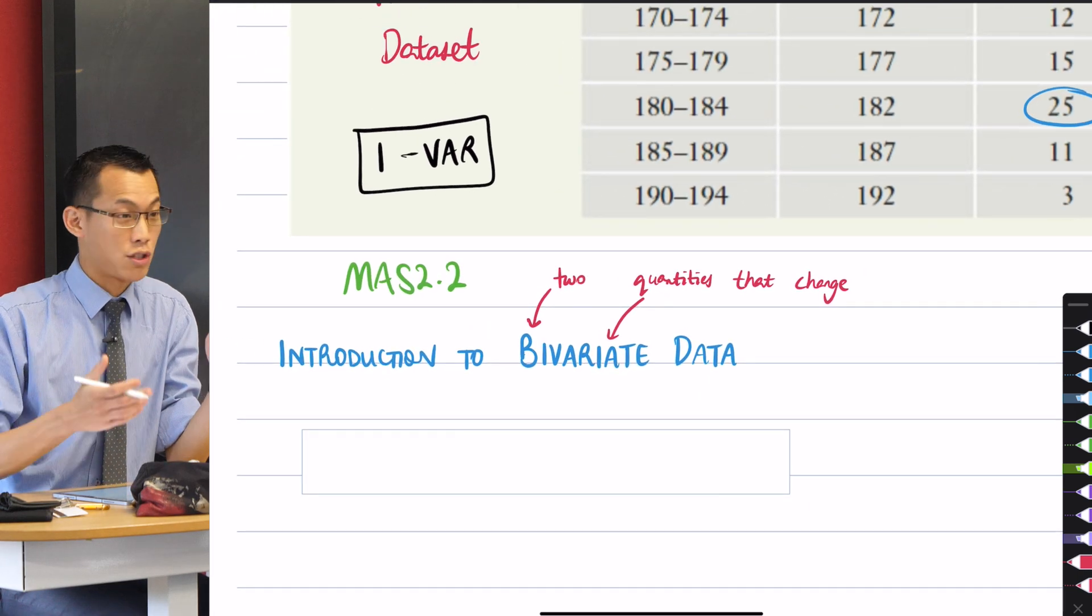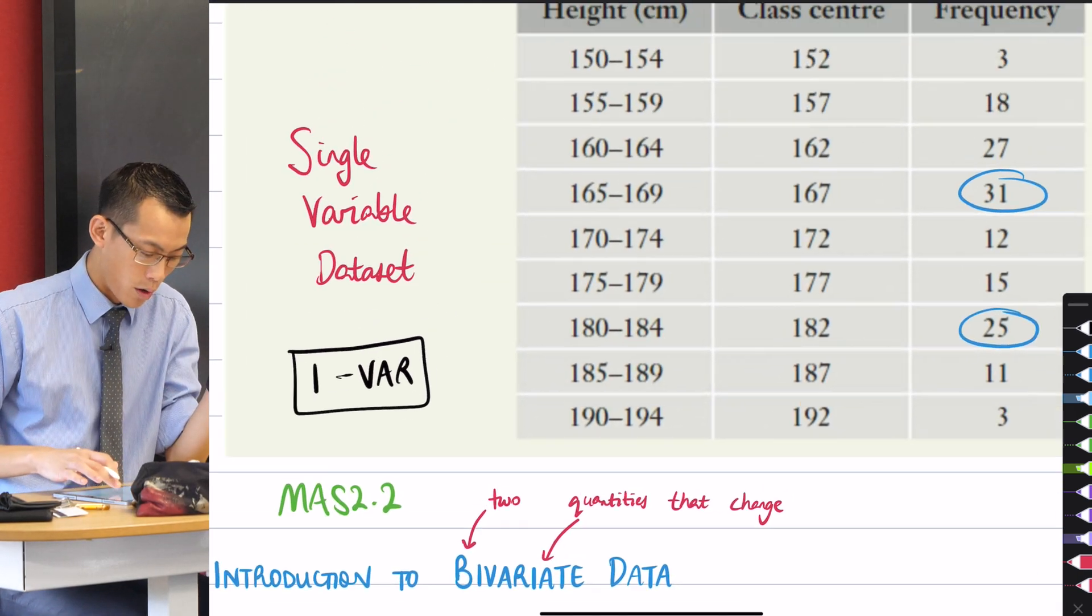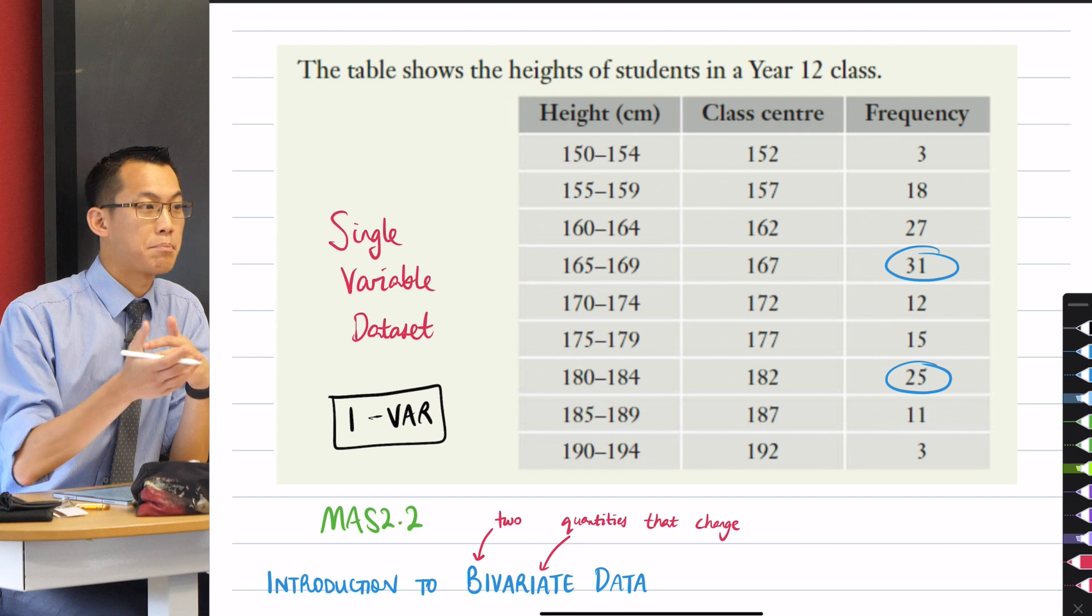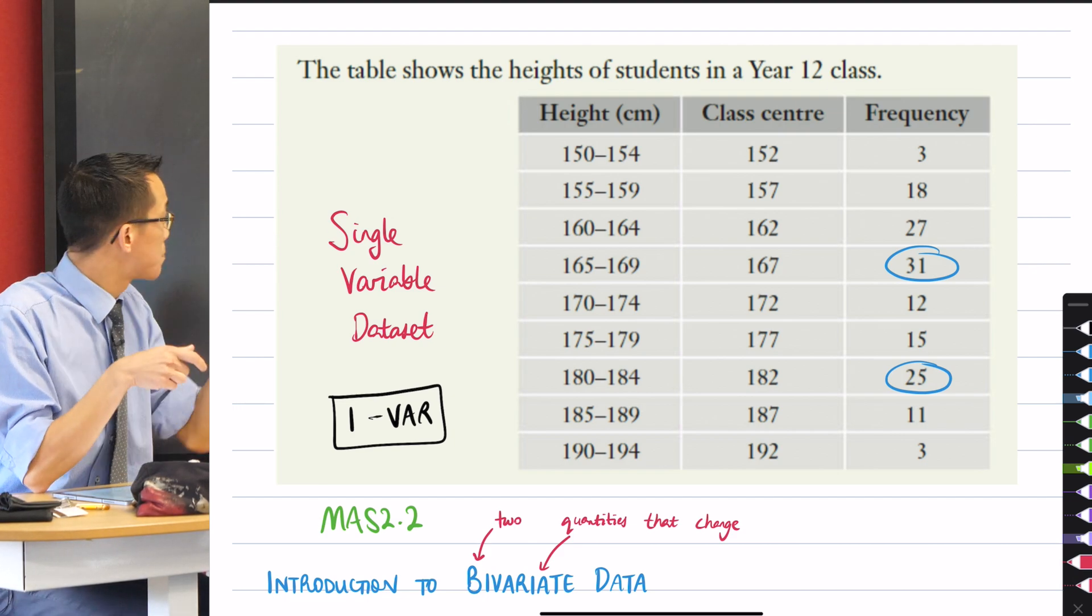So Bivariate Data - all it means is two quantities that change. It's just so important that when you're throwing terminology like this around, you understand there's a simple idea underneath it. And in this case, it's just like there's two things I want to often compare. What if I wanted to compare not just height, but say, age?